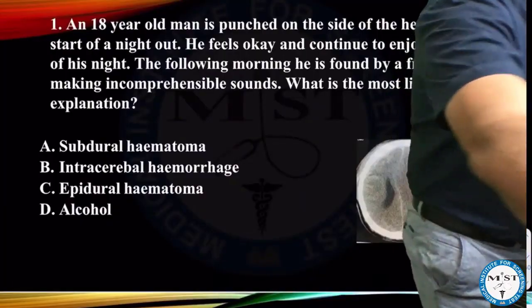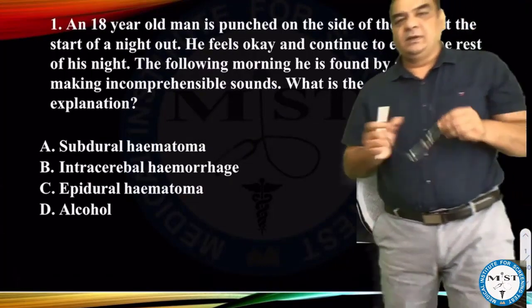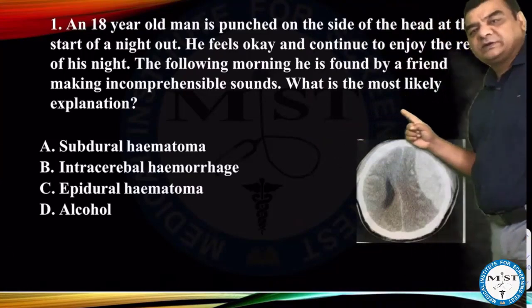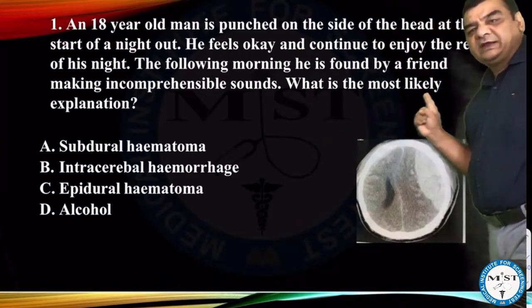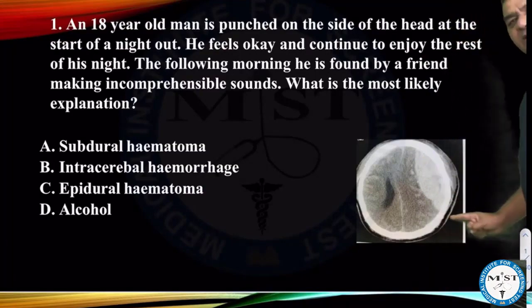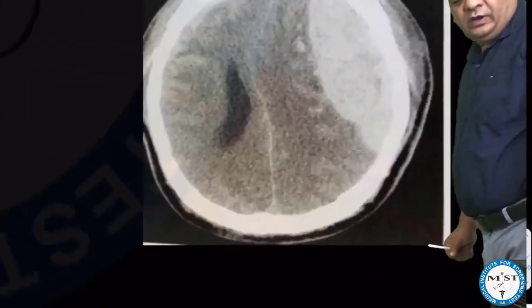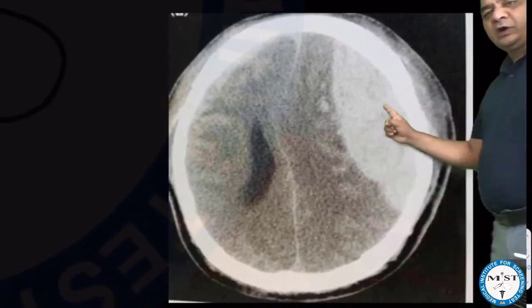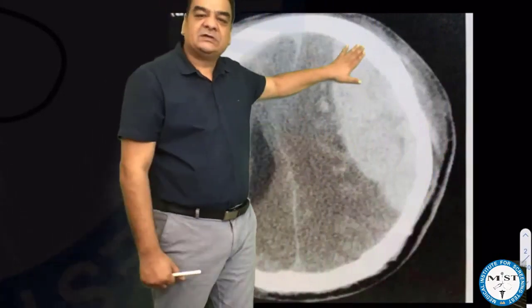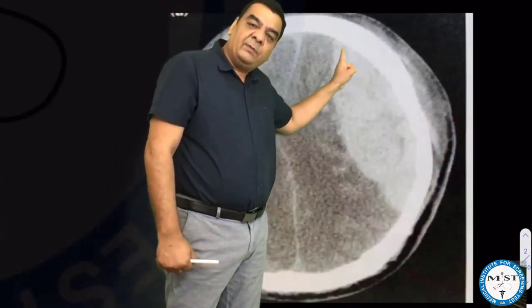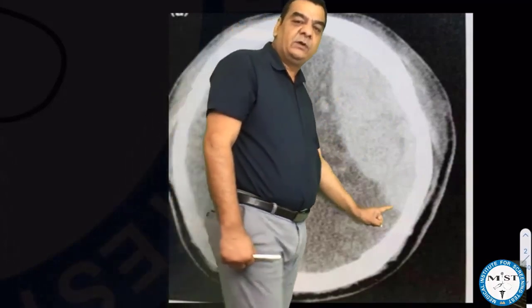How are we going to read this particular question? Let us go with the last line of the question first: 'What is the most likely explanation?' Now in this particular question we have got an image. If you are able to identify what this image is all about, you can understand that this image is extradural hematoma because it is a hyperdense convex shadow what we are able to see.